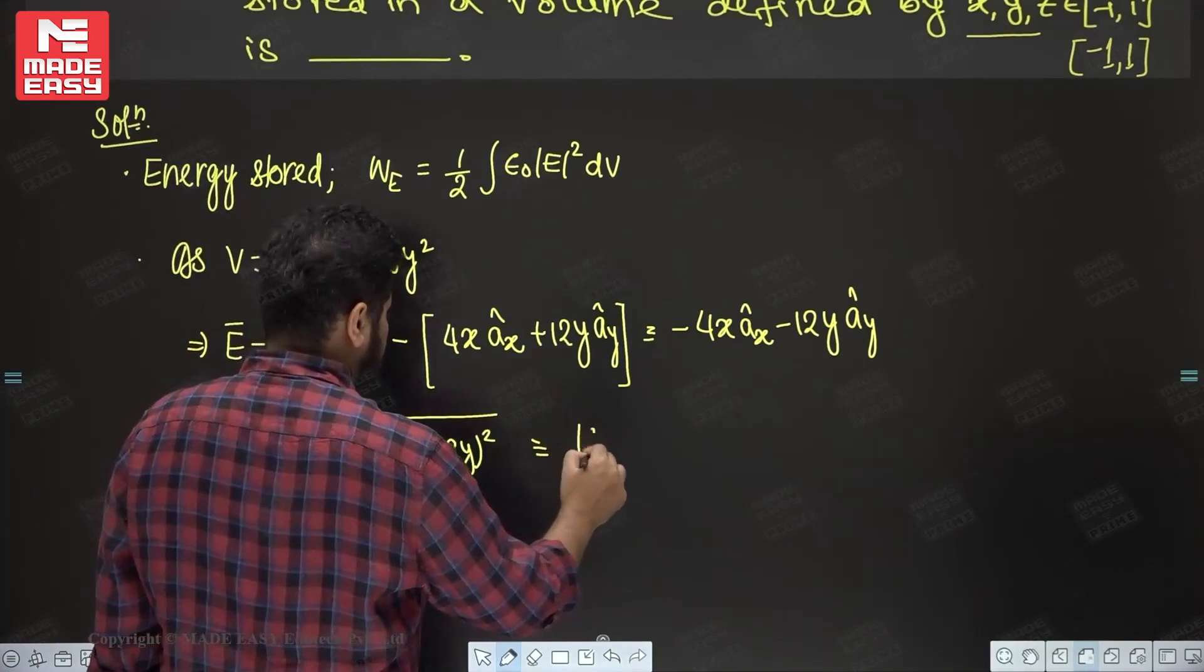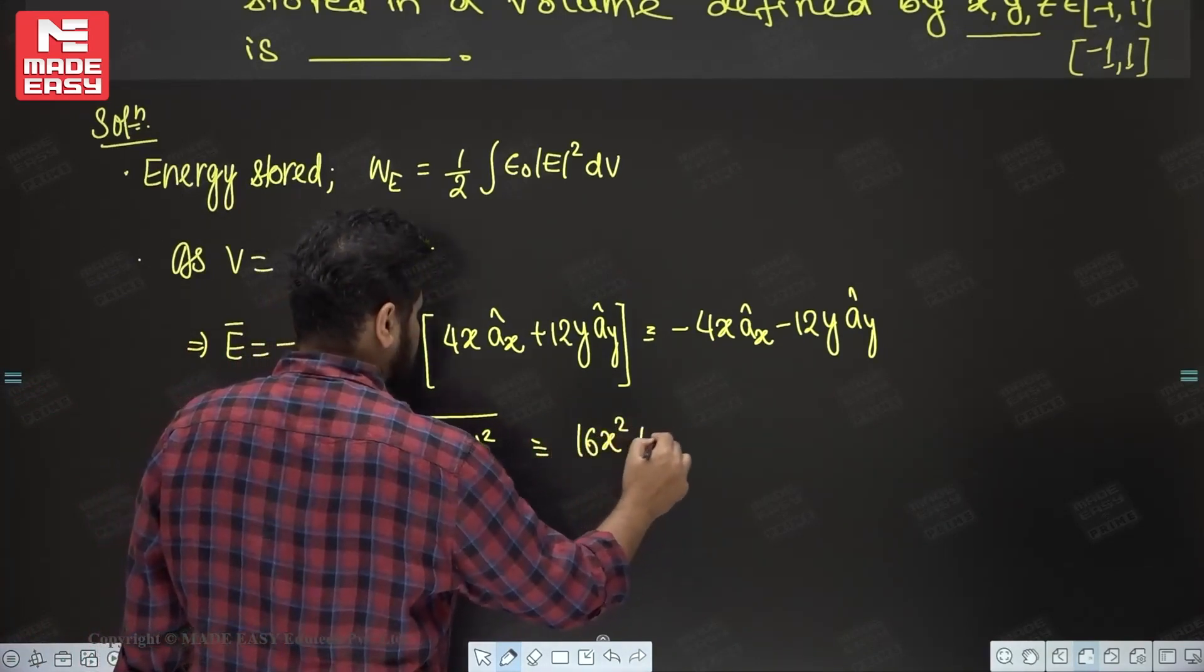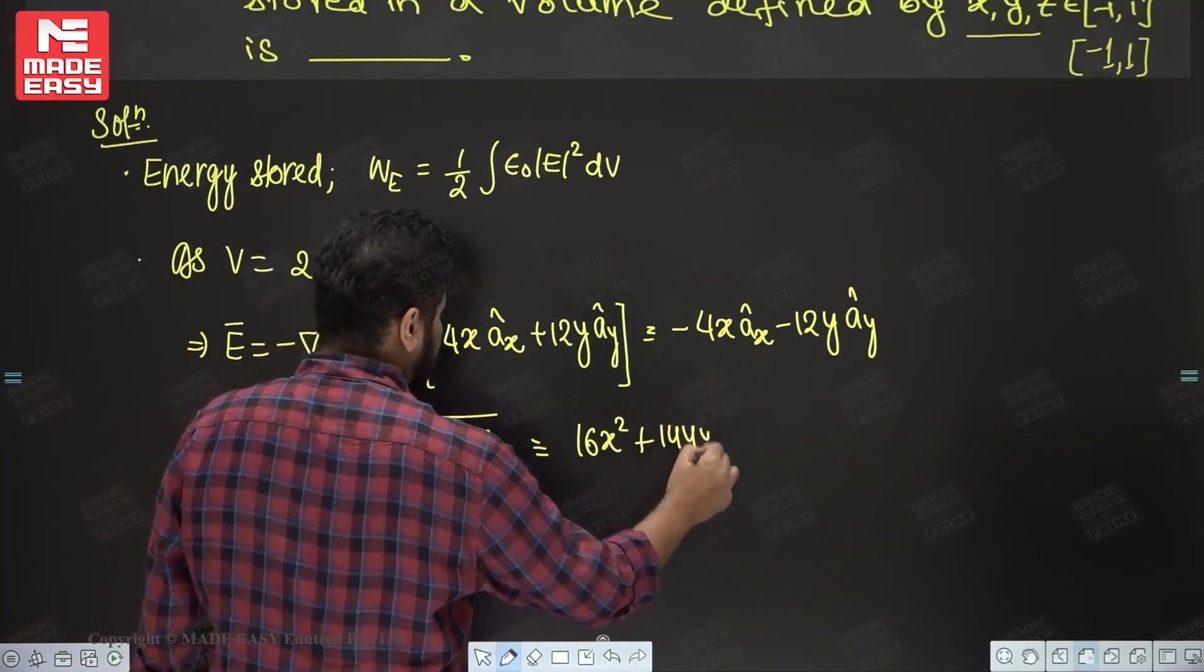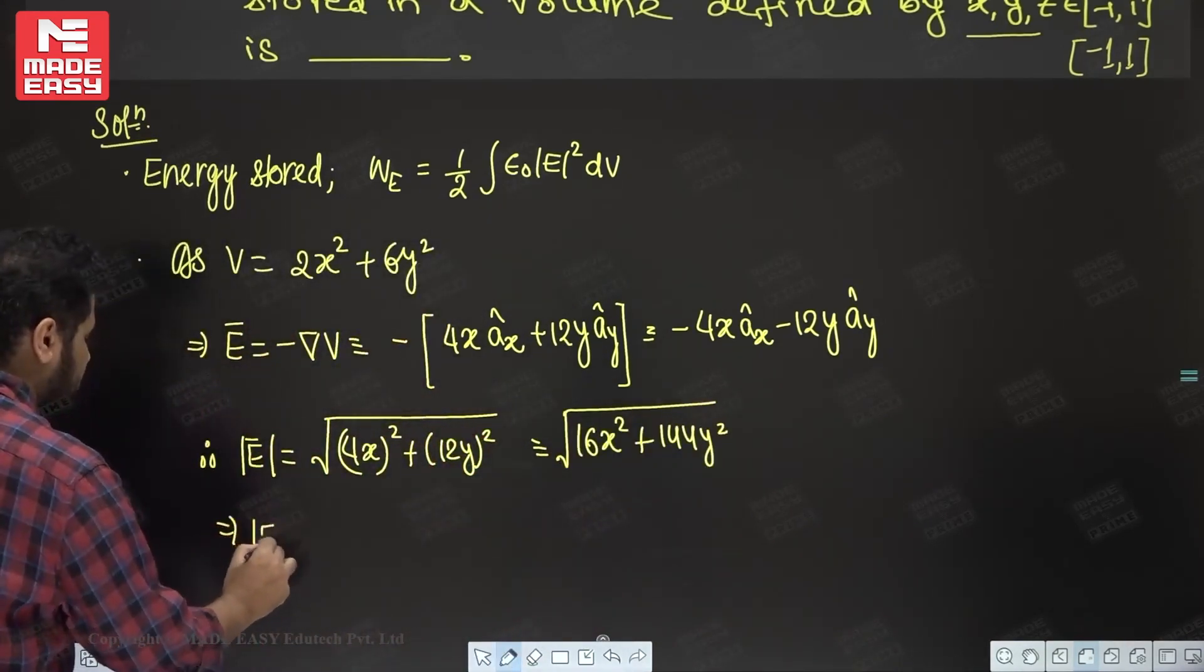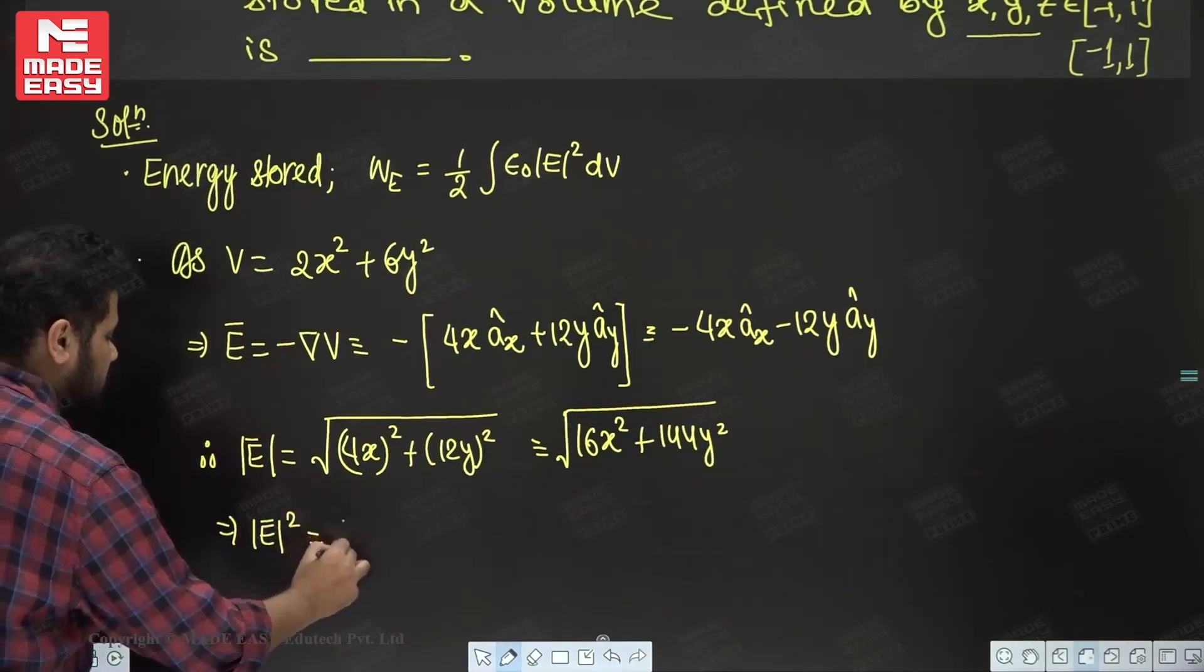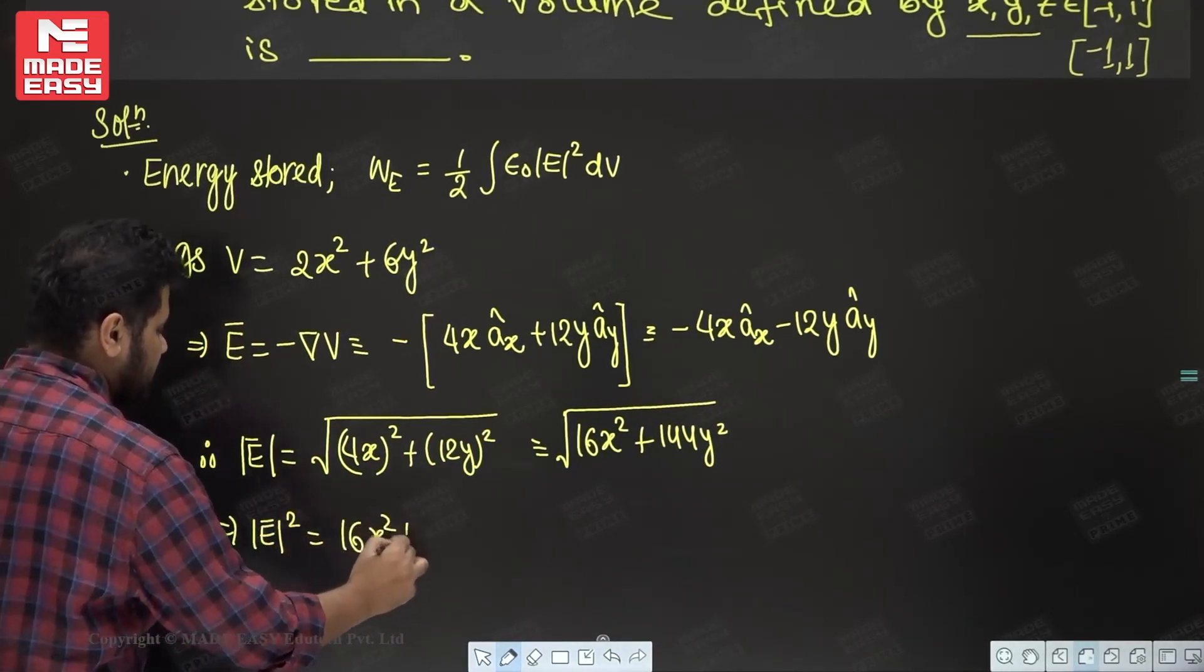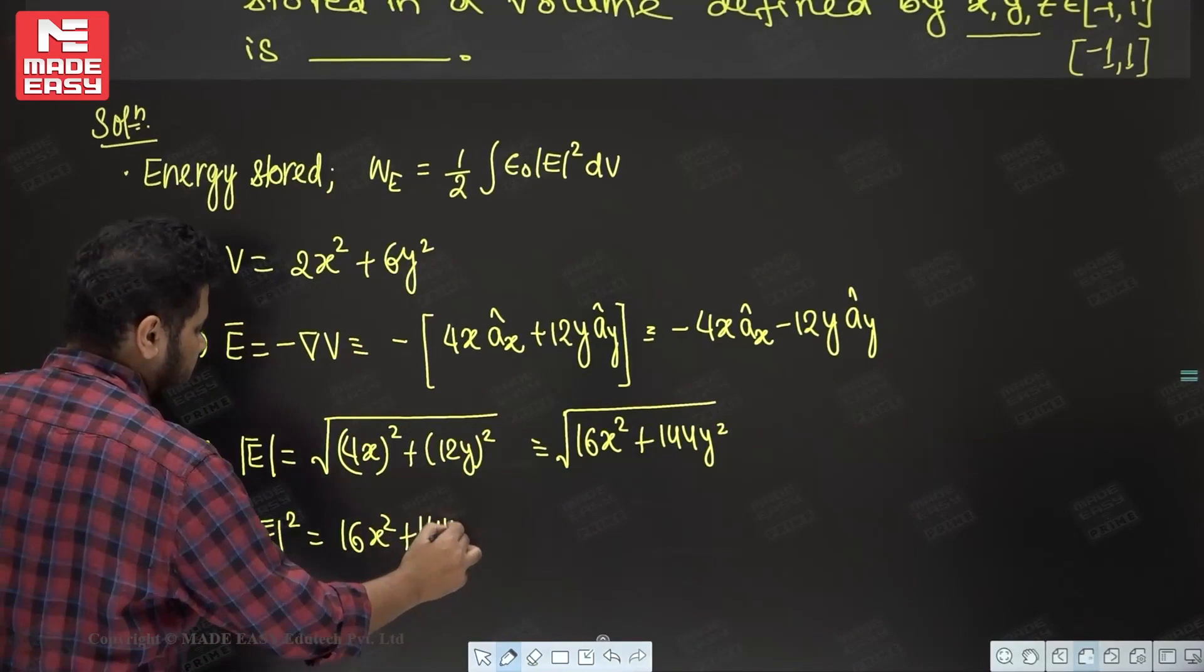This is 16x² + 144y² root under. But I want mod of E square. So mod of E square will be 16x² + 144y².